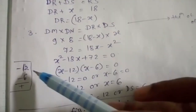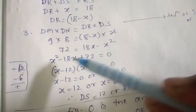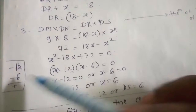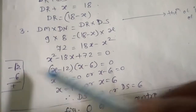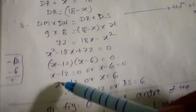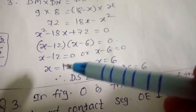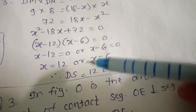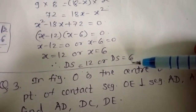So (x − 12)(x − 6) = 0, giving x = 12 or x = 6. Since x was defined as DS, we get DS = 12 or DS = 6.